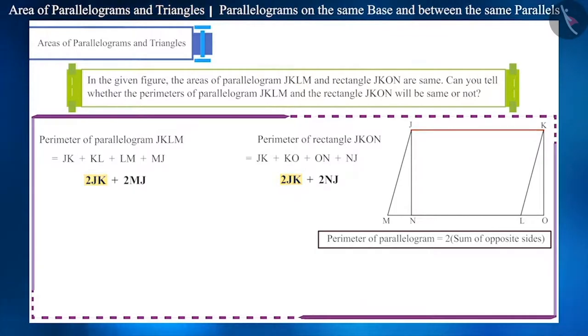Therefore, to compare the parameters of parallelogram JKLM and rectangle JKON, we have to compare their sides MJ and NJ. We can write it like this. Can you tell what would be the relation between the two? Will these two be equal?